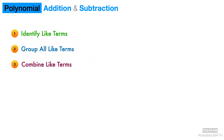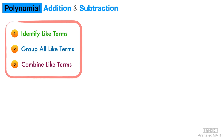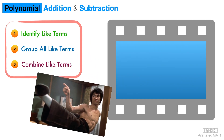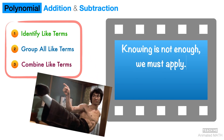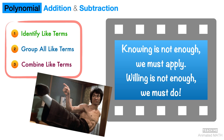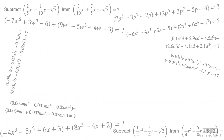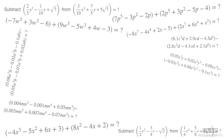I know that just hearing me say how to do polynomial addition and subtraction might be insufficient. And as the great Bruce Lee said, knowing is not enough, we must apply. Willing is not enough, we must do. To get a better grasp of what you really need to do, you must apply the steps I mentioned by doing polynomial addition and subtraction yourself. Don't worry, because it's actually pretty simple, and I will show you how it is done in full detail. So solve along with me to gain mastery of polynomial addition and subtraction.